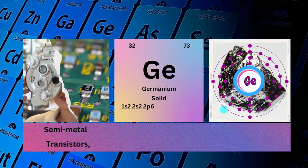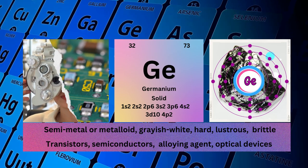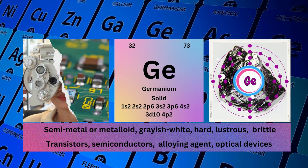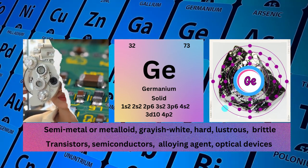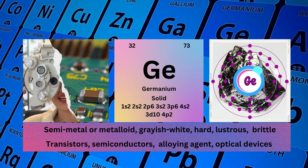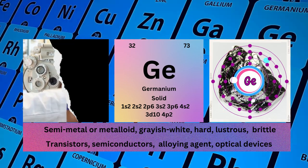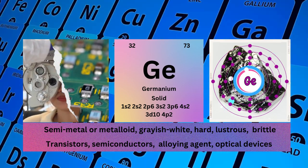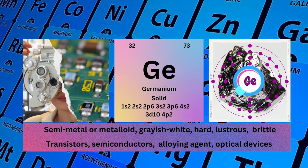Germanium. Atomic number 32. Mass number 73. Symbol GE. State solid. Electronic configuration 1s2 2s2 2p6 3s2 3p6 4s2 3d10 4p2.